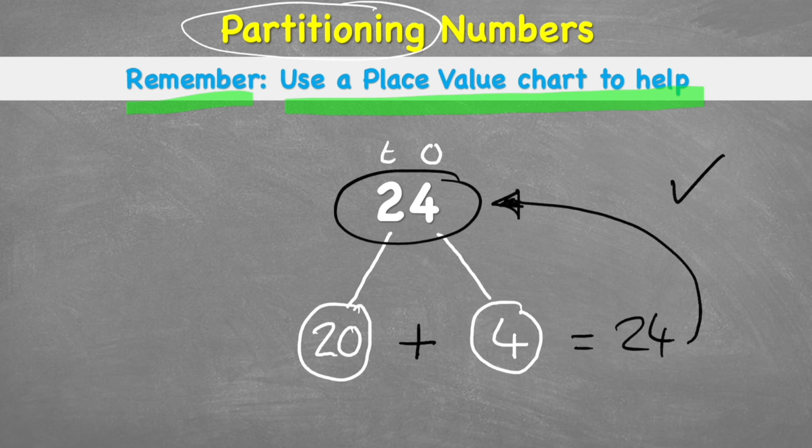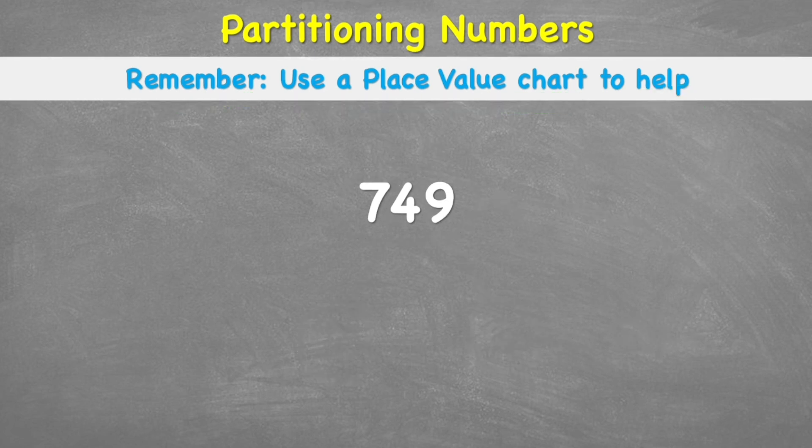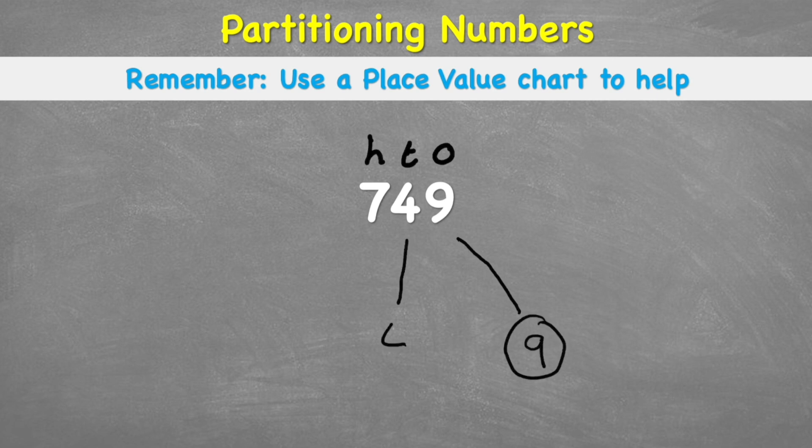Let's move to a slightly harder example, 749. So I can see with my 749 that I have 9 1s, I have 4 10s, and I have 7 100s. So therefore, when I'm partitioning, I can break this down into 9 single 1s, 4 10s, which would be 40, and 7 100s, which would be 700.